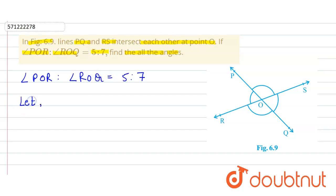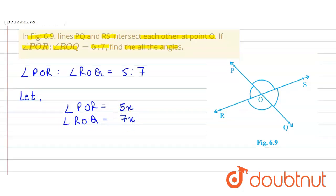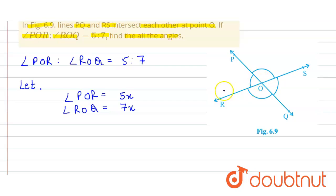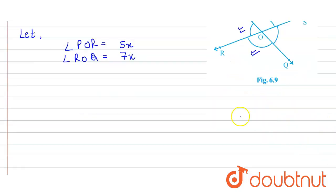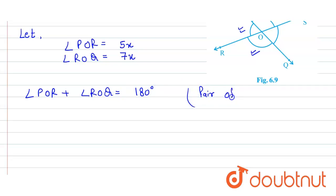We can consider: let angle POR equal to 5x and angle ROQ equal to 7x. Angle POR and angle ROQ are a pair of linear angles, so we know that their sum will be equal to 180 degrees. So angle POR plus angle ROQ equals 180 degrees — reason: pair of linear angles.